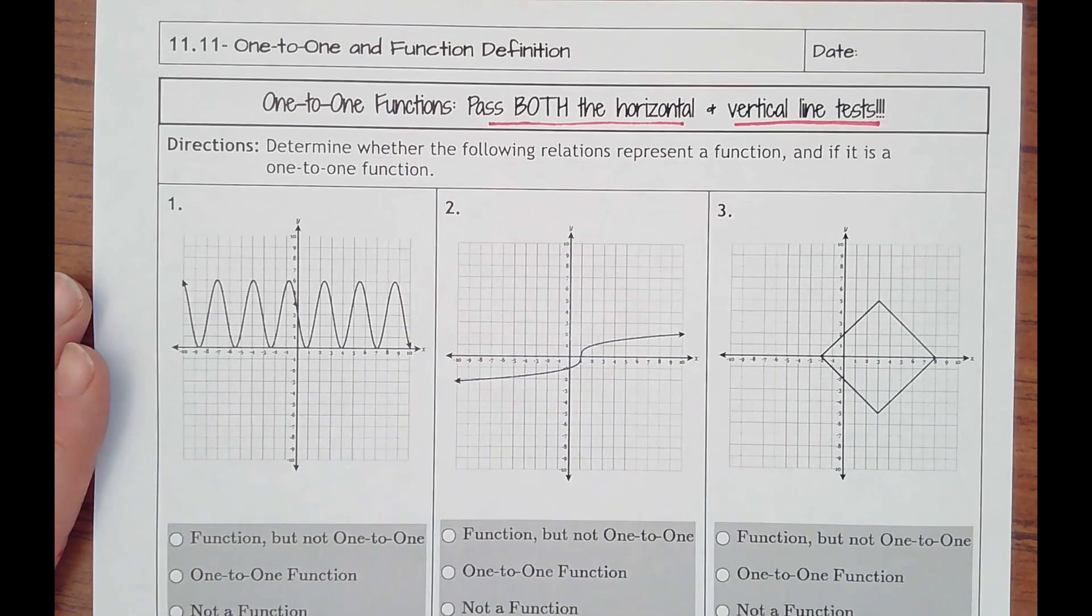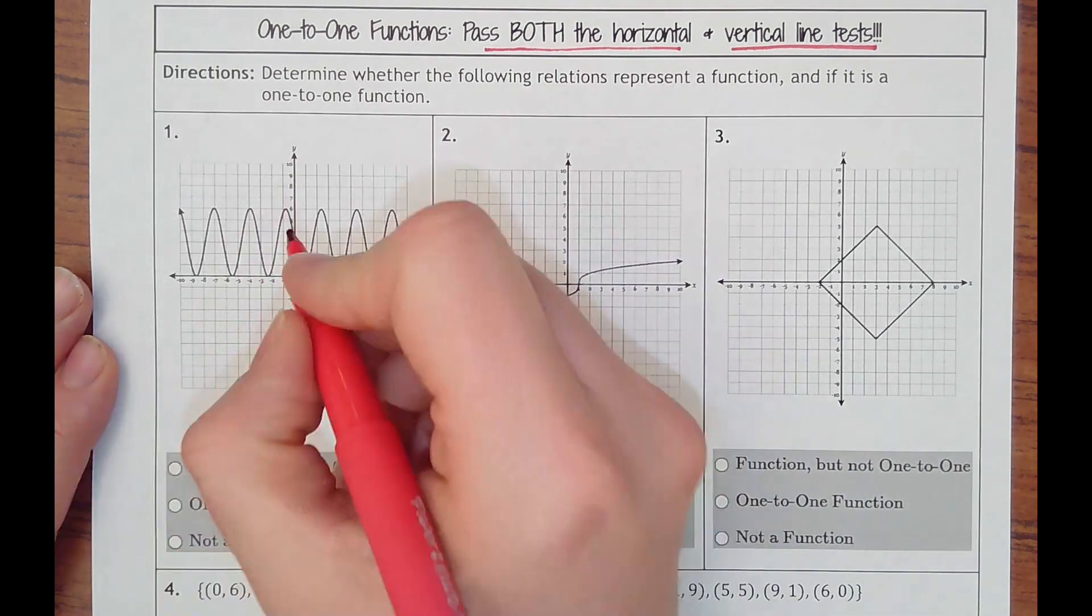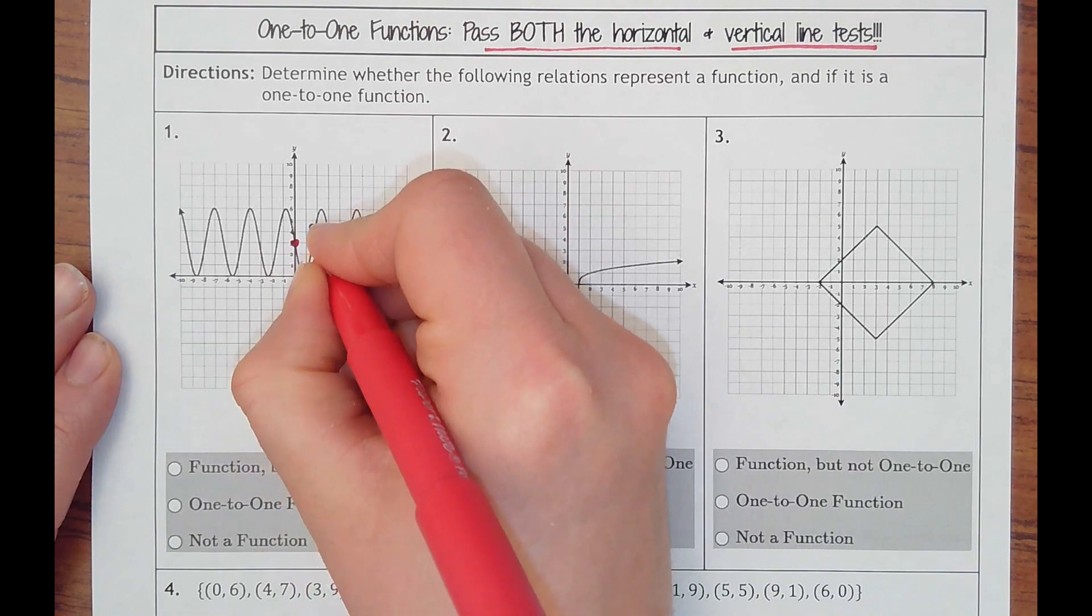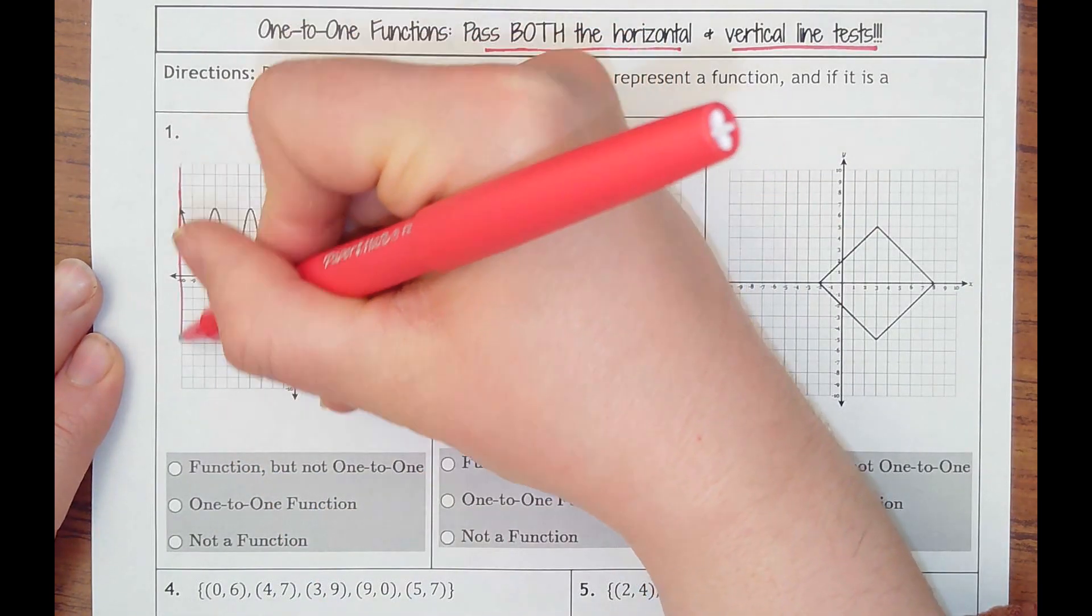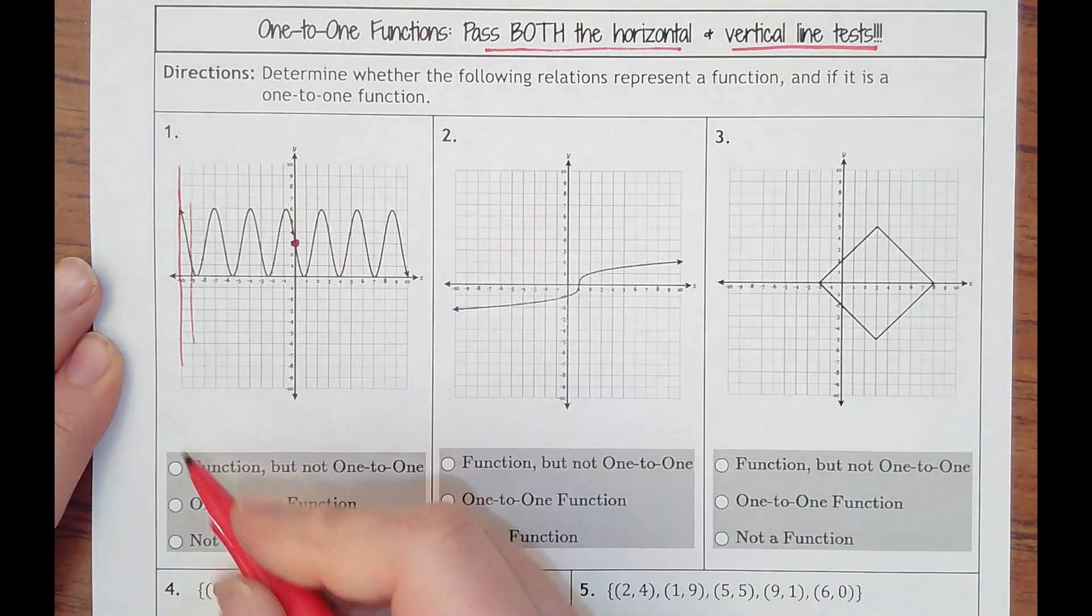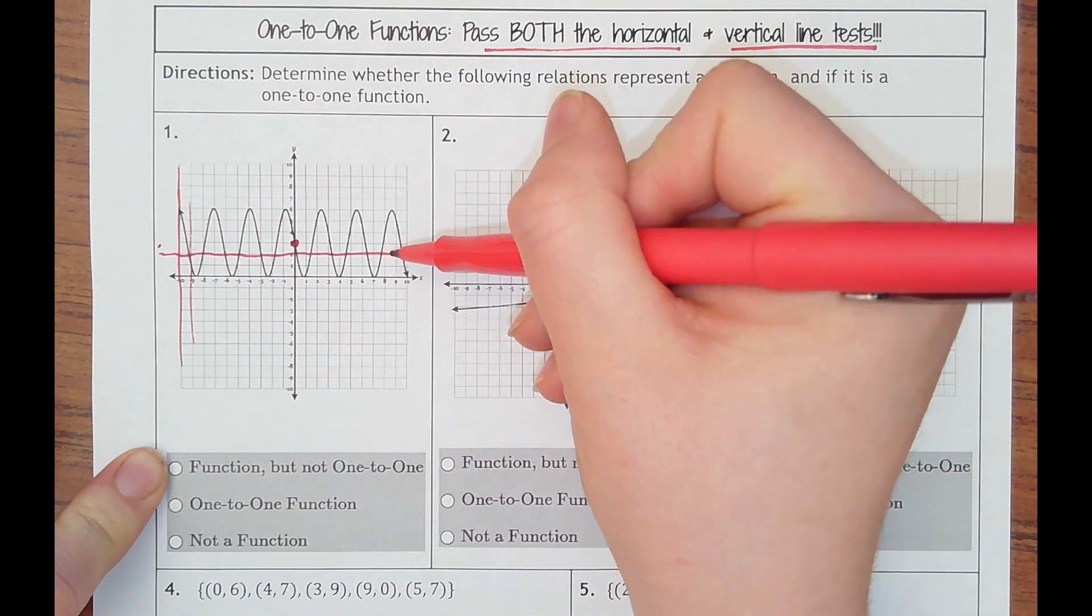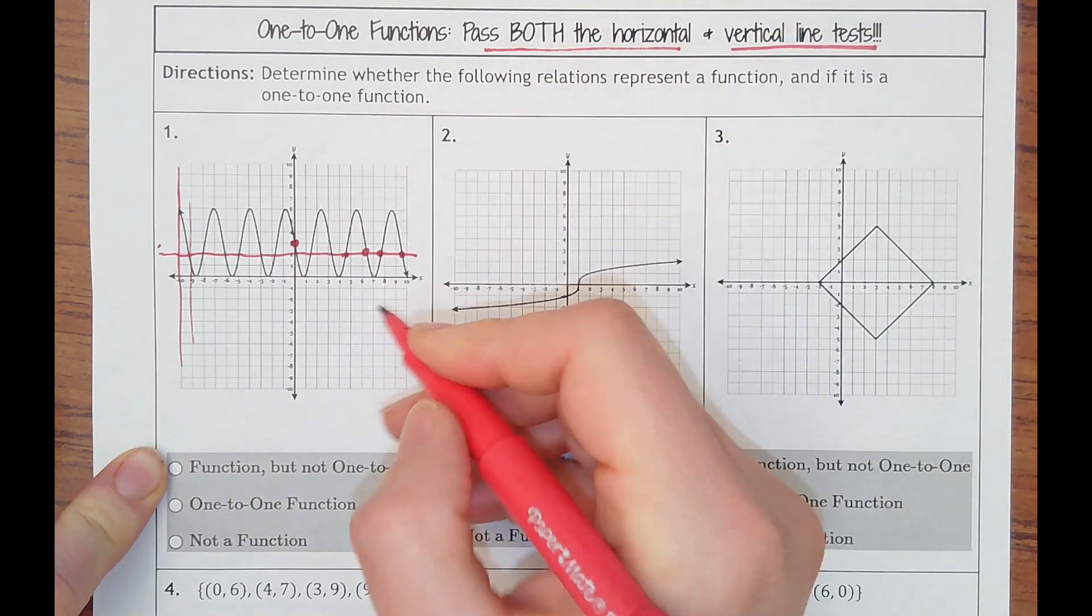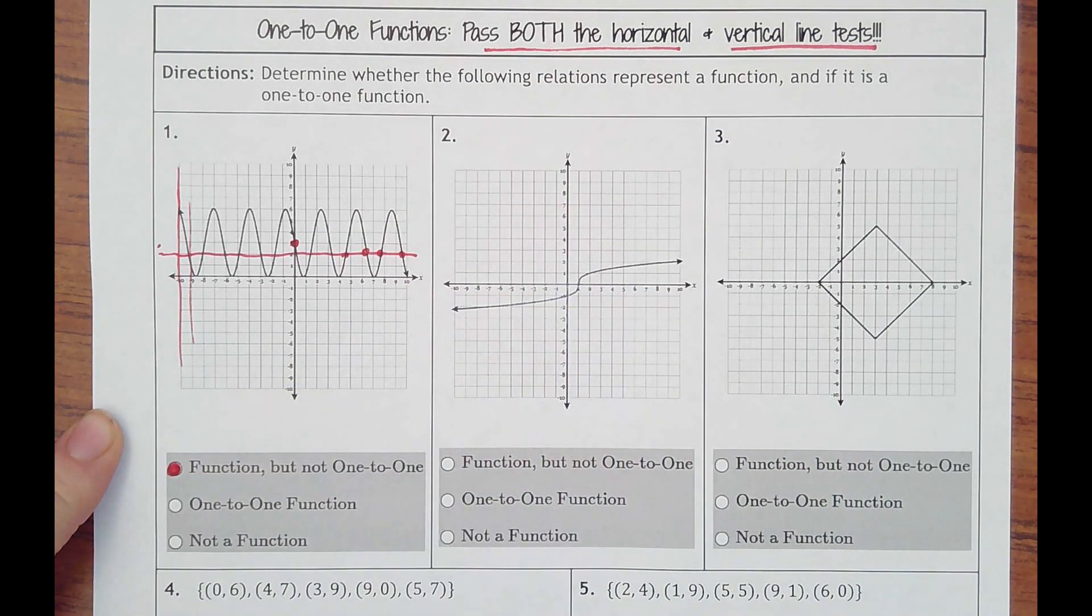We're determining which one of these is the best description of the graph. This looks like a cosine graph because I see it starting middle, going low, middle, high, middle, low. It is a function. It's going to pass the vertical line test if I were to slide my pen here. So it is a function, but it's not one-to-one because on a single horizontal line, look how many times it touches it. Lots and lots. And this keeps going forever and ever. So it is a function, but it's not a one-to-one function.